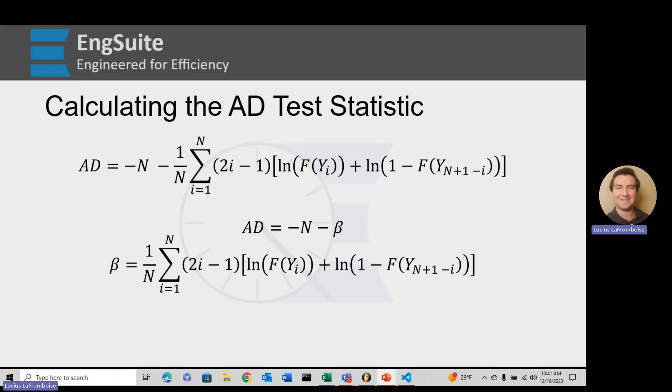So the sum of 2I minus 1 times, then in these brackets here, the natural log of F of Y, I. YI is the ith ordered data. F is the cumulative distribution function for the specified distribution using the parameters, and natural log is just the natural log of that.